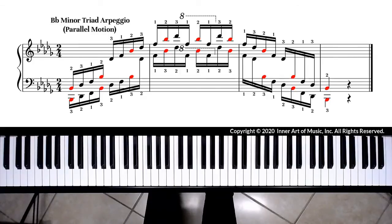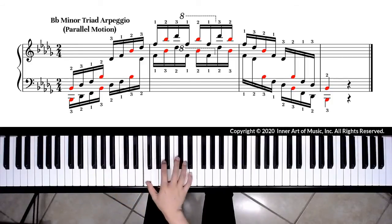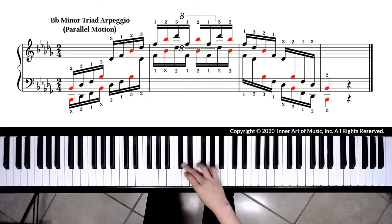For Bb minor triad arpeggio fingering, we use right hand fingering: two, three, one, two, three, one, two, three, one, two, and so on.